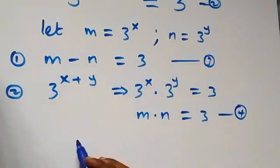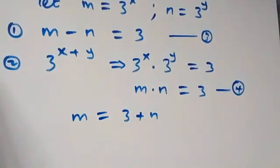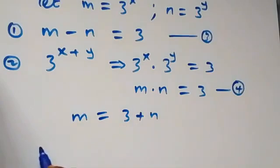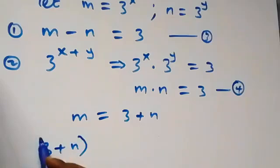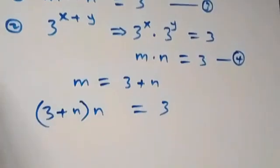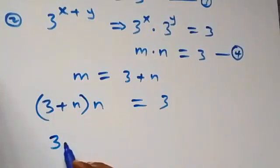From equation 3, when we make m the subject, we take minus n to the other side, so m equals 3 plus n. We can now substitute this into equation 4, which becomes (3 plus n) times n equals 3. Expanding the brackets gives us 3n plus n squared equals 3.